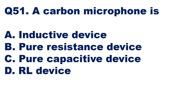Question 51: a carbon microphone is — options are inductive device, pure resistive device, capacitive device, or RL device. In a carbon microphone, carbon granules are used. Movement of the diaphragm where sound waves hit will vary the resistance of the granules, controlling the line current in accordance with the sound waves. It is a pure resistance device where resistance changes cause the current in the outer circuit to vary. Option B — pure resistive device — is the right answer.